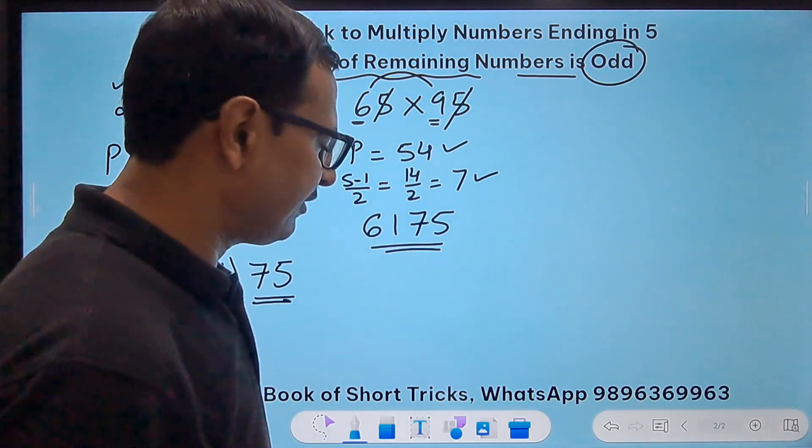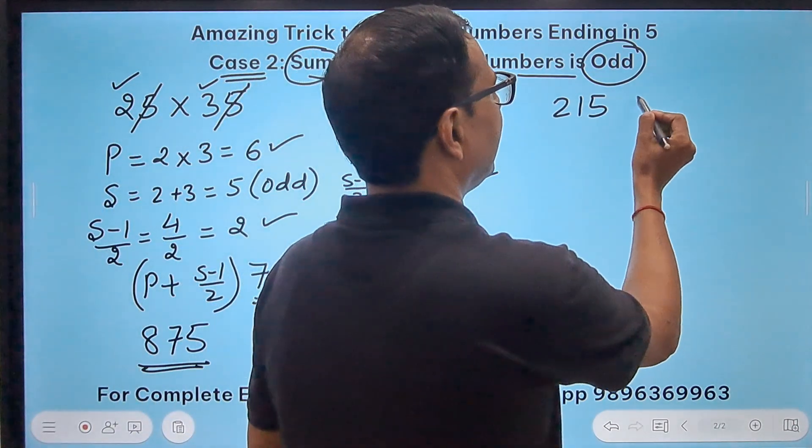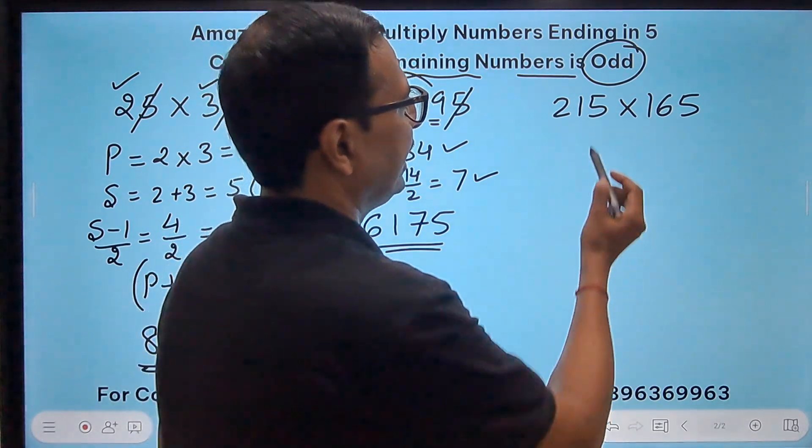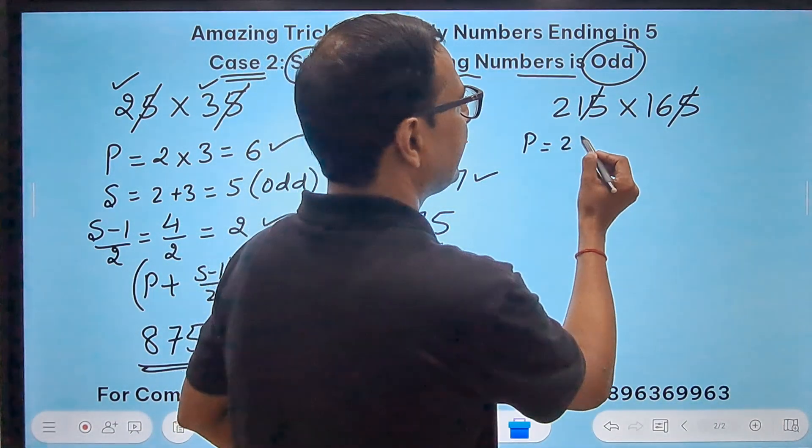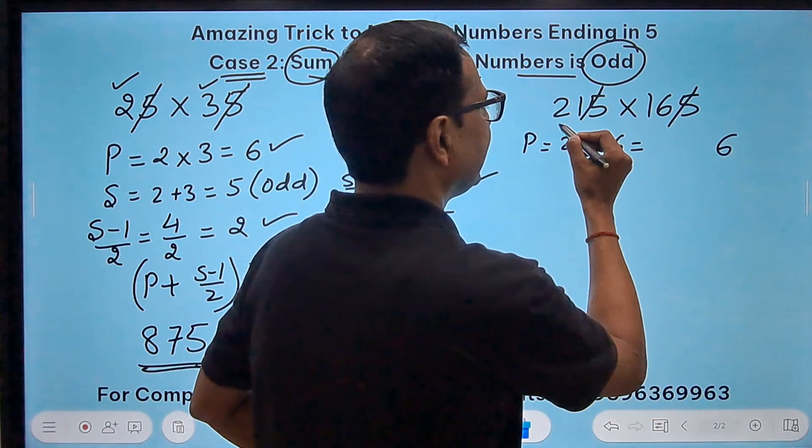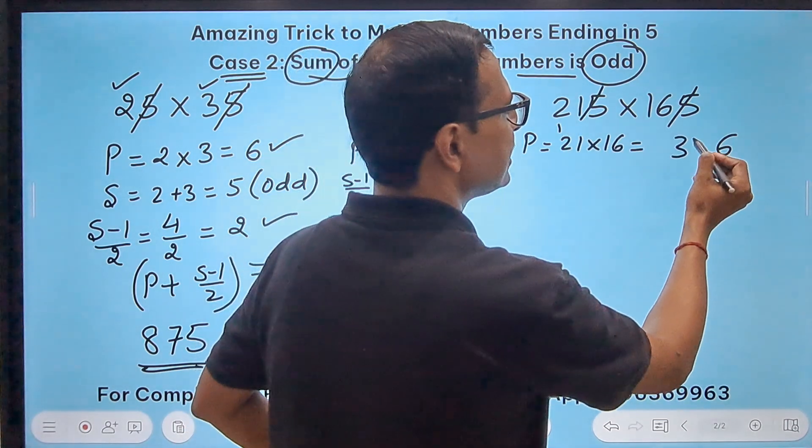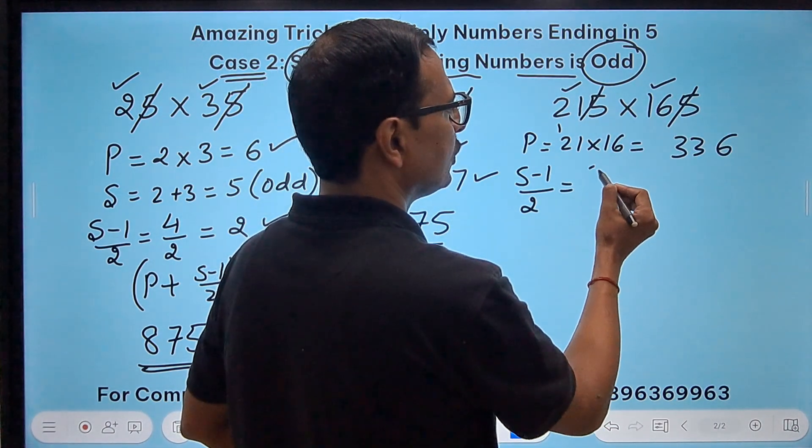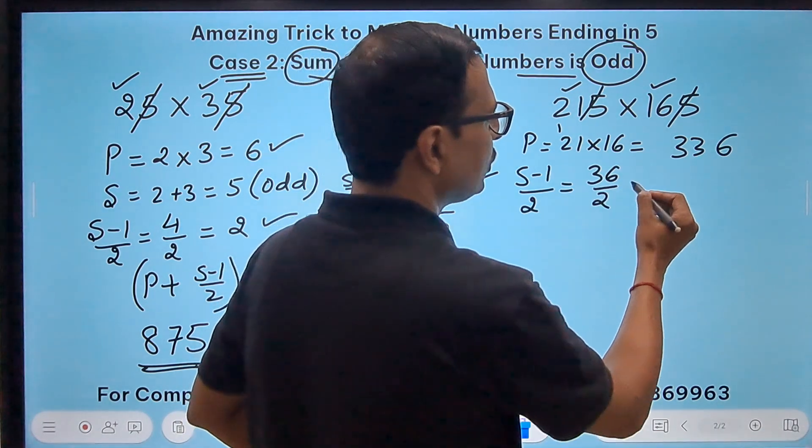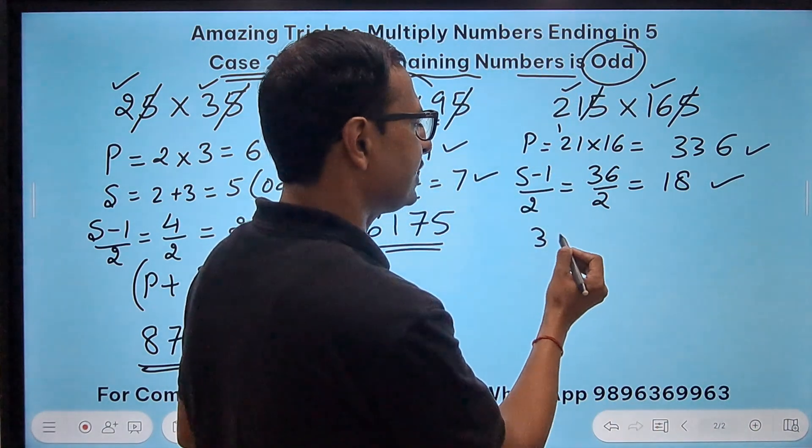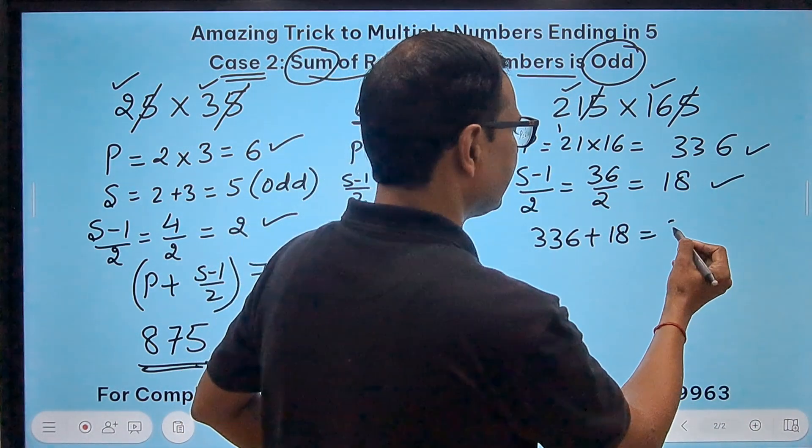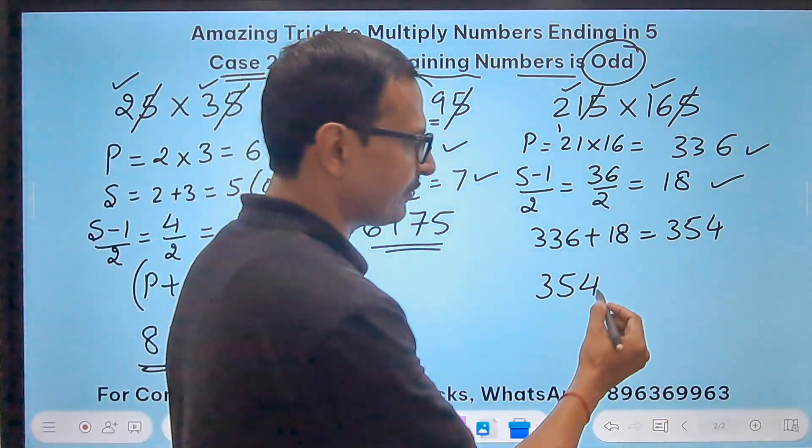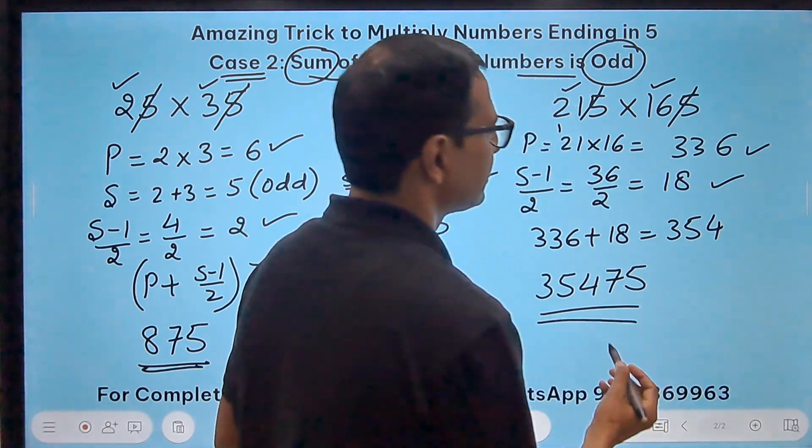Let's take a big example now, 215 and 165. Eliminate the 5s. You have to take the product of 21 and 16. So 16 ones are 16, 1 carry, 16 twos are 32, 33, 336. And S minus 1 upon 2, the sum is 21 plus 16 is 37. So 1 reduced is 36, by 2 gives me 18. Now add these two. 336 plus 18 gives me 354. So 3, 5, 4, and then we have to suffix 75 to the result to get our answer for the product.